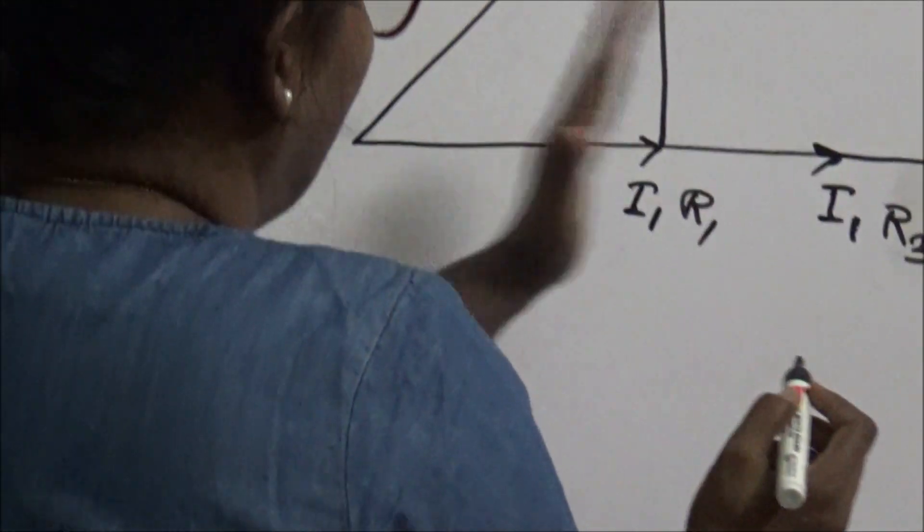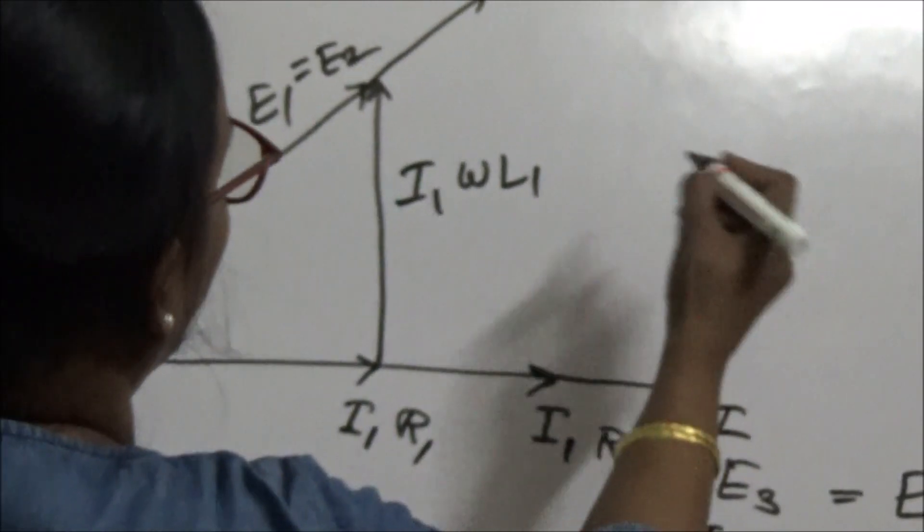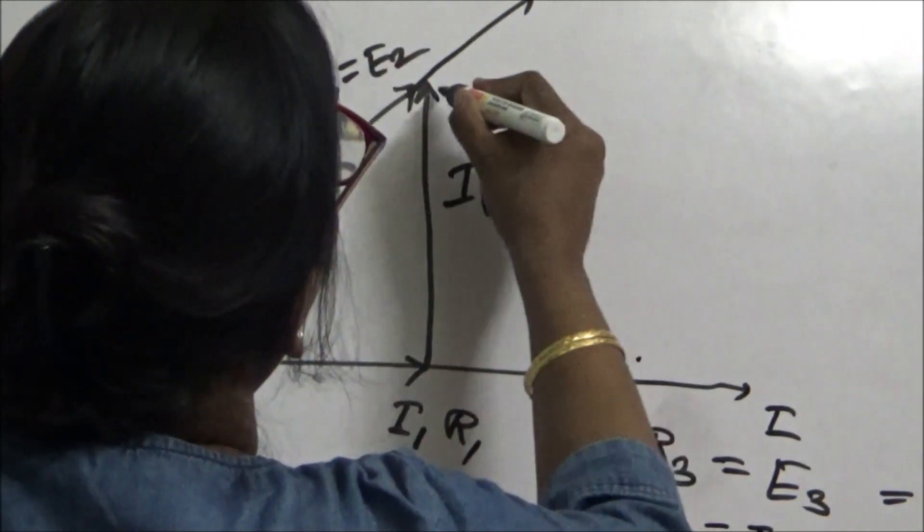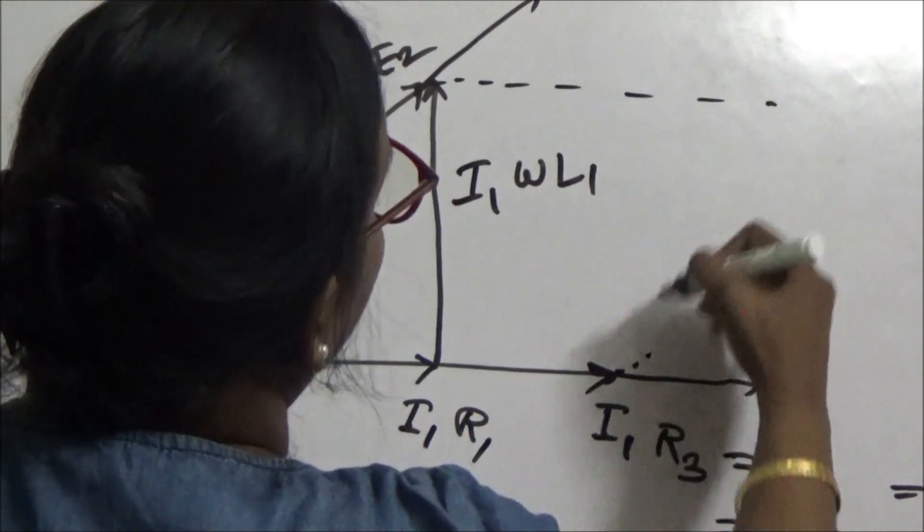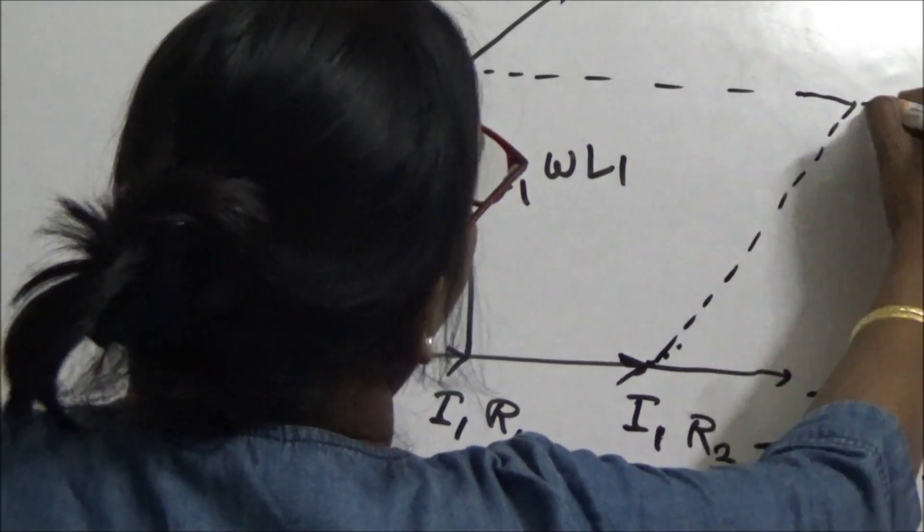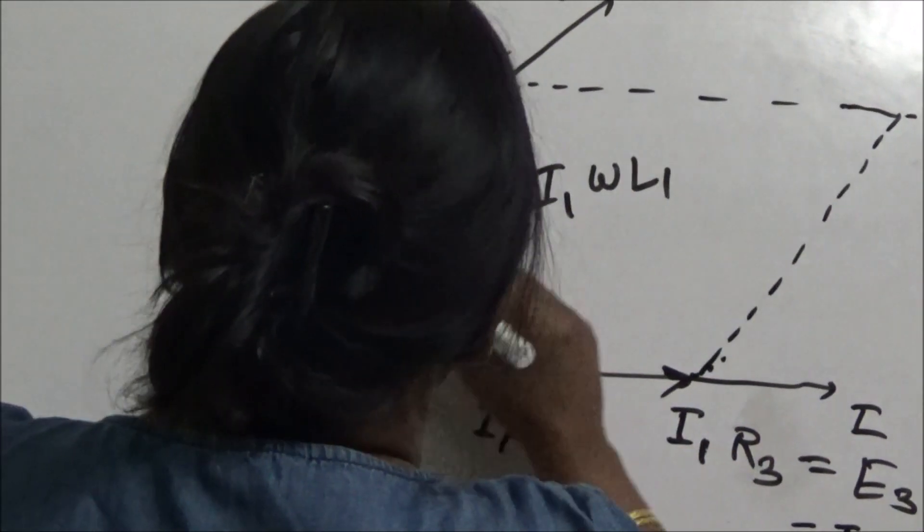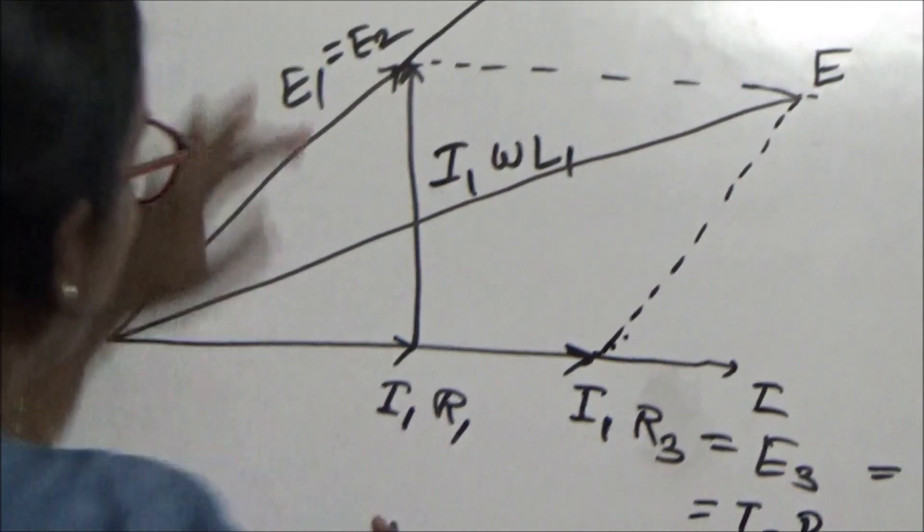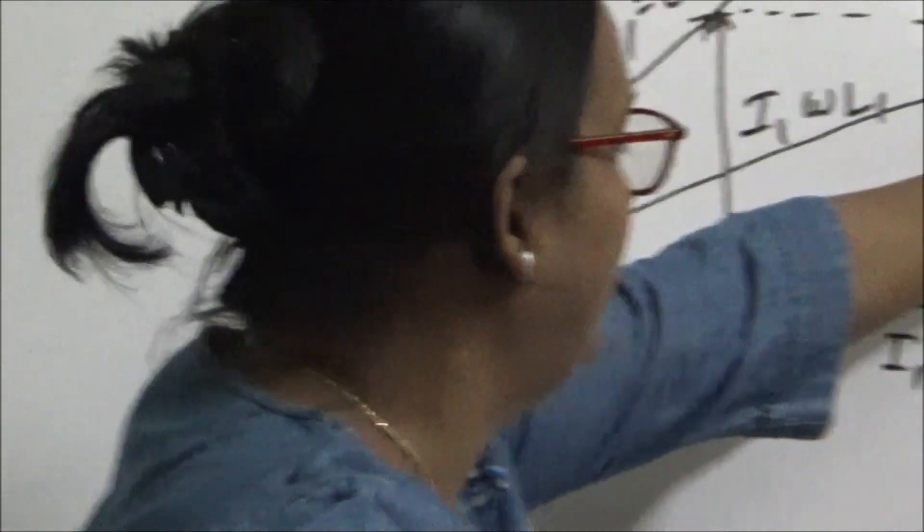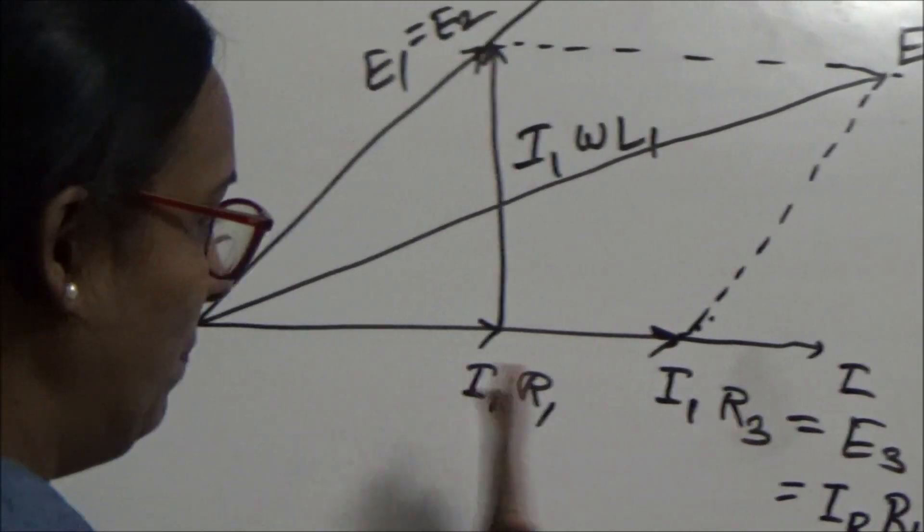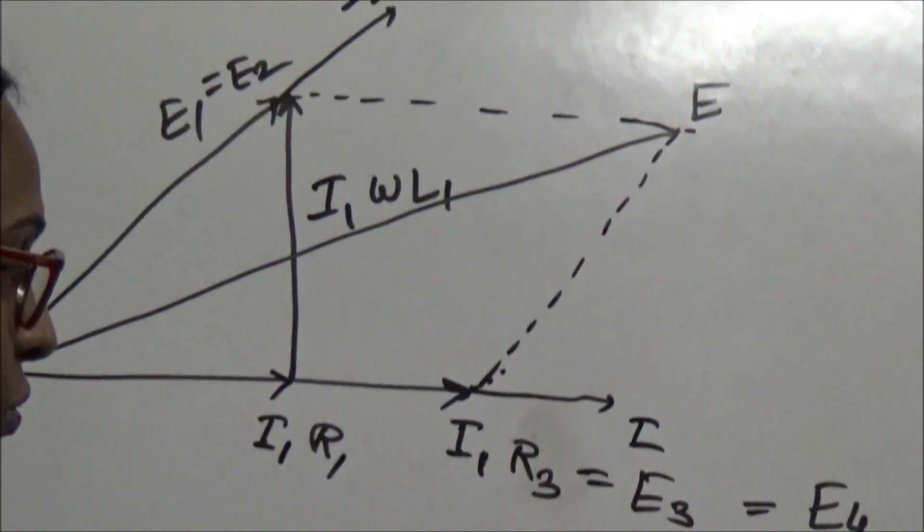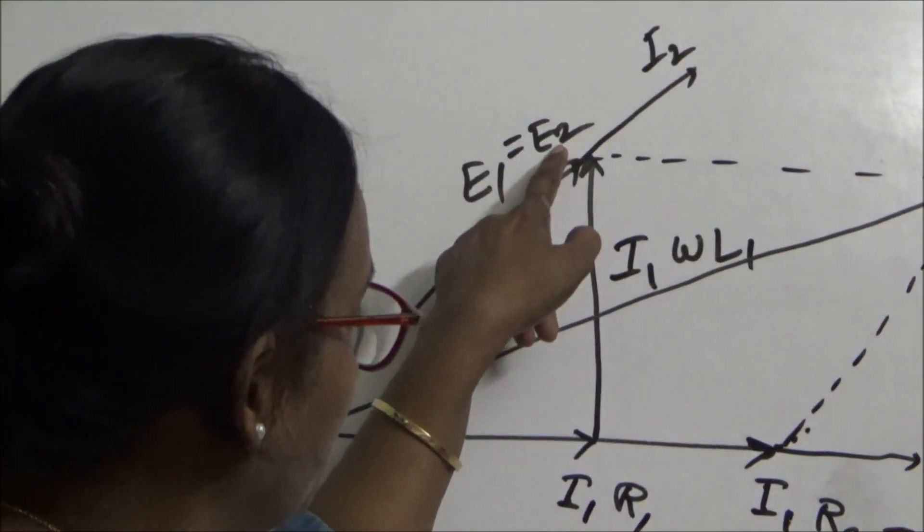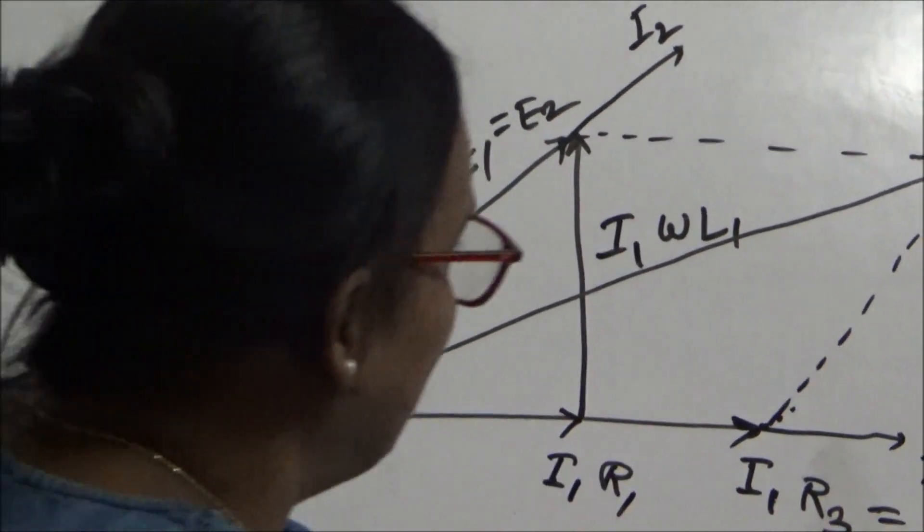So E1 plus E3 is equal to total voltage. E2 plus E4 is also equal to total voltage. Now I want E2. This is E2. So E2 plus E4 is equal to E.